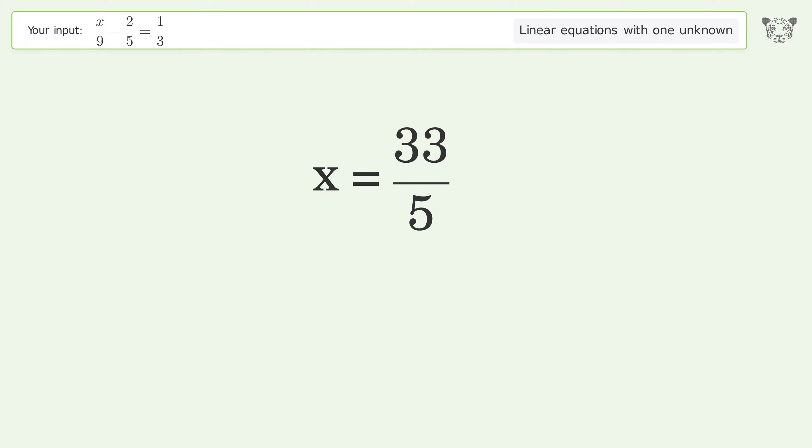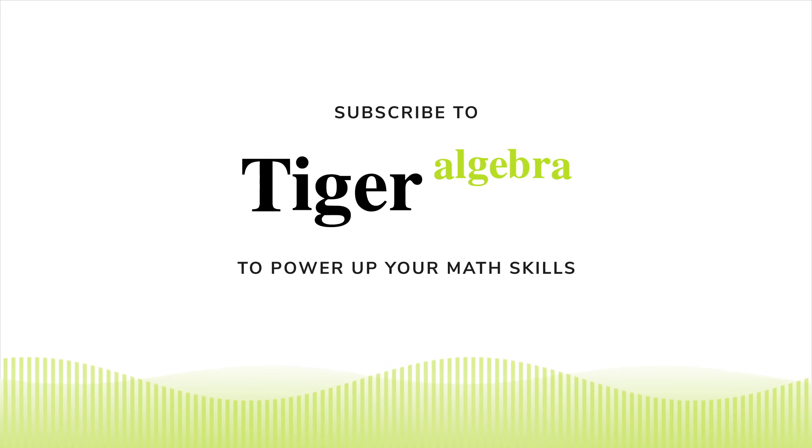And so the final result is x equals 33 over 5.